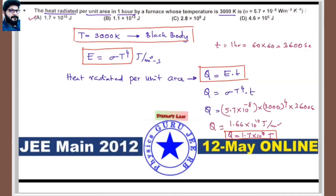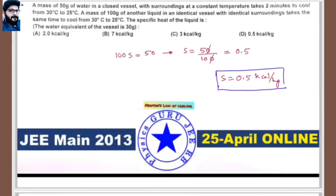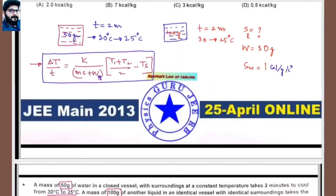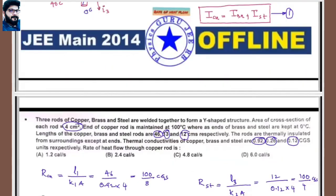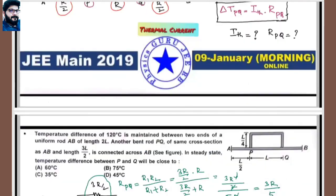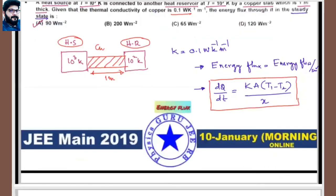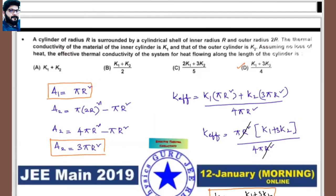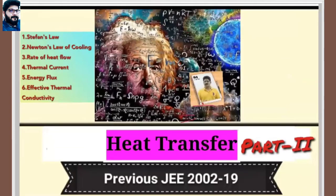Today we discussed previous IIT JEE questions covering: effective thermal conductivity (2019), Newton's law of cooling (2014 and 2013), rate of heat flow (2014), thermal currents (2019), energy flux (2019), and Stefan's law (2012). In part three, we will discuss questions related to graphs — that will be the last part of heat transfer previous JEE questions.